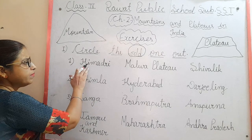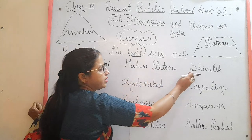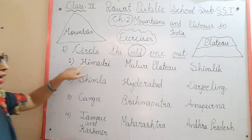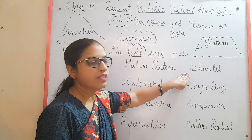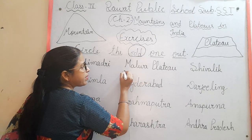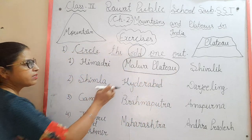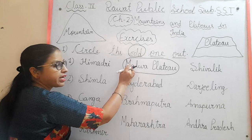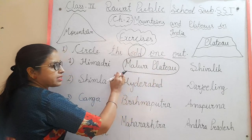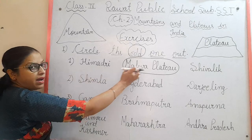First set: Himadri, Malwa Plateau, and Shivalik. Himadri is a mountain and Shivalik is also a mountain, but Malwa is a plateau. So Malwa Plateau is the odd one — we circle it and take it out from the group.